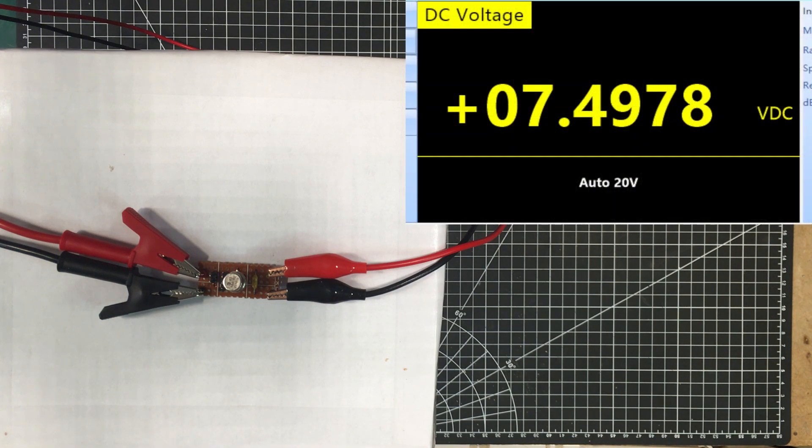I've got it set up here for 7.5 volts out. I've got pins 2 and 3 connected together and we're getting the output here on pin 1. We can see 7.4978 volts, so that is 2.2 millivolts out. Specifications said for 7.5 volts it's supposed to be plus or minus 4 millivolts, so it's well within spec.